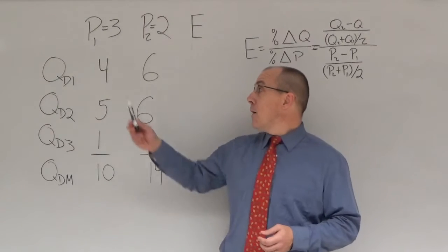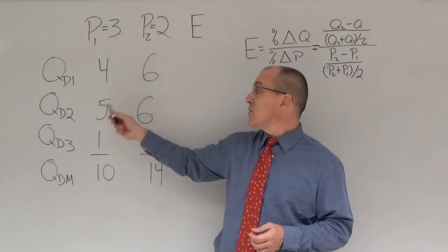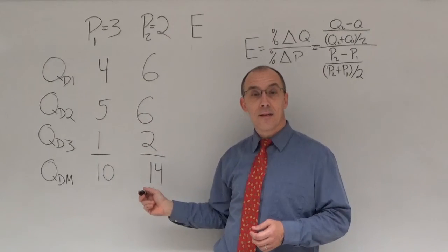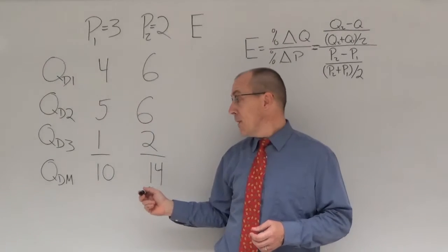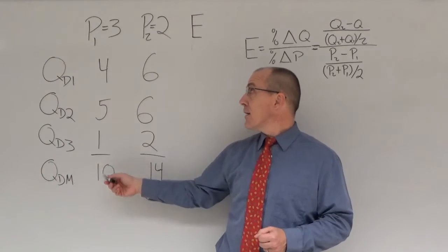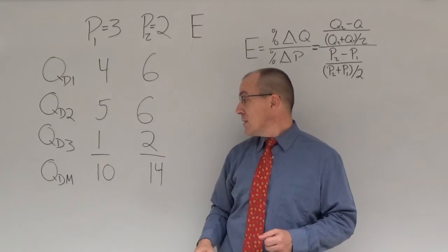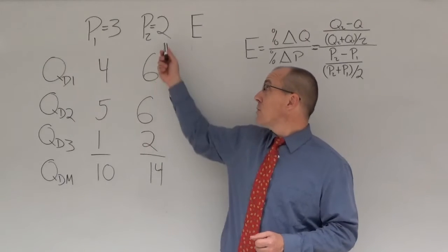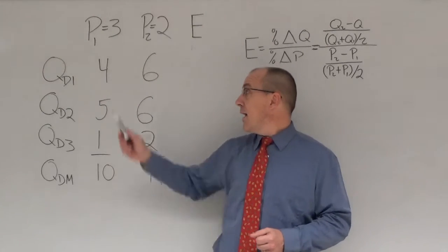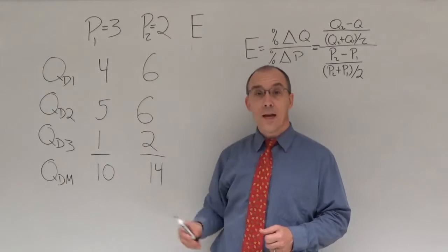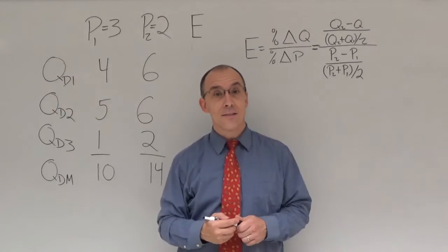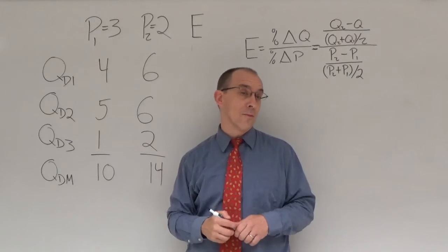This is a follow-up to the previous problem where we looked at how much different individuals purchased at two different prices and how that affected the entire market. We saw that at a price of 3, quantity demanded was 10, and at a price of 2, quantity demanded was 14, and that's how the two quantities broke down between the different individuals.